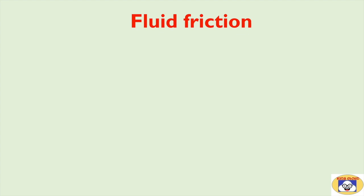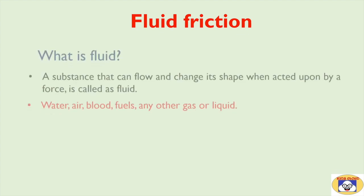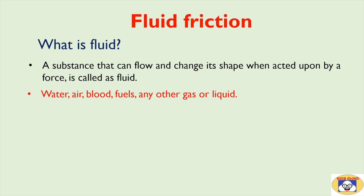The fourth type of friction is fluid friction. First, we need to understand what a fluid is. A substance that can flow and change its shape when acted upon by a force is called a fluid. Water, air, blood, fuels, and any other gas or liquid are examples of fluid.